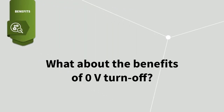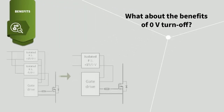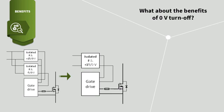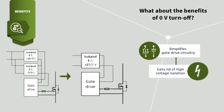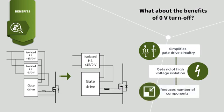You are probably wondering now about the benefits of zero-volt turn-off. Well, the main benefit is that it simplifies the gate drive circuitry by going from 15V, 0V, and -5V to 15V and 0V only. Also, it allows us to get rid of one high-voltage isolation DC-DC power supply and reduce the number of components, which translates into a smaller gate drive board and potentially a lower failure risk.